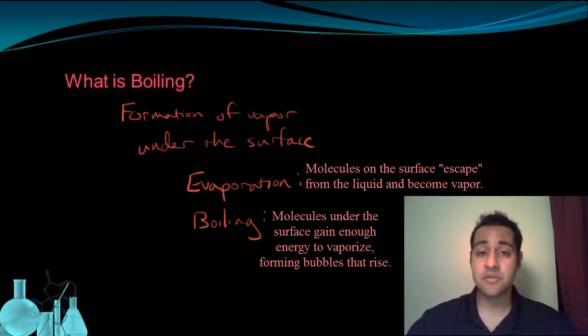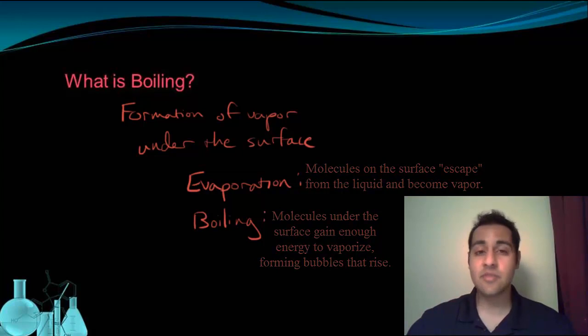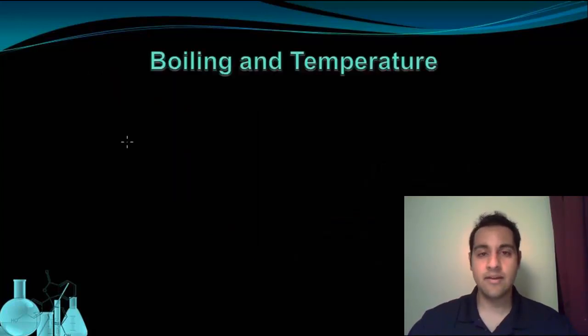Now from your own experience, you know that boiling occurs when you add enough heat to something. So that means boiling has to have some relationship with temperature. And in fact, if you were to put a thermometer into a sample of boiling water, you would see that the thermometer would read 100 degrees Celsius for boiling water. And even if you increase the amount of heat added to the water, the temperature would not rise above 100 degrees Celsius.